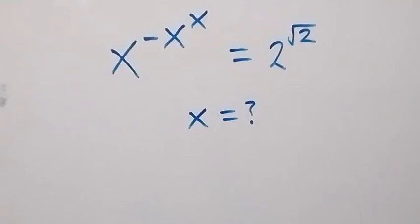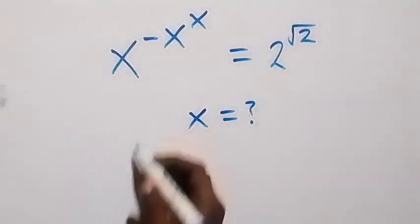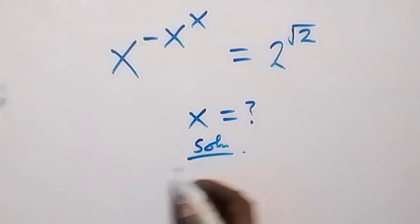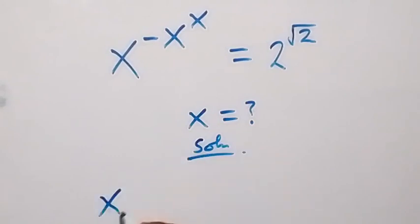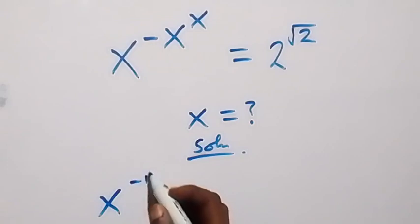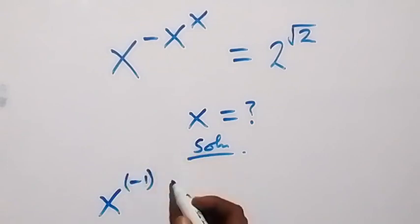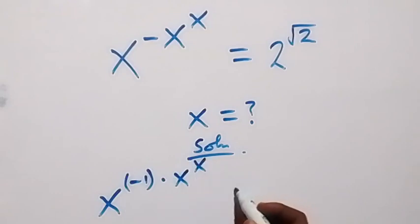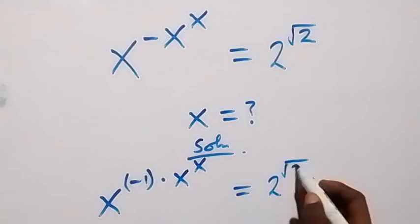Hello, you are welcome. How to find the value of x in this nice exponential equation. Here we can rewrite what we have as x raised to power minus 1 when we separate it out, n times x raised to power x, now equals 2 raised to power root 2.